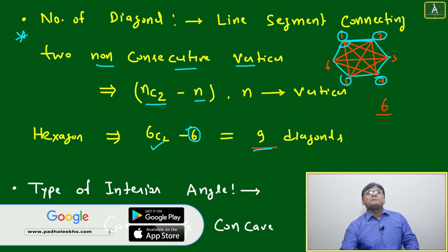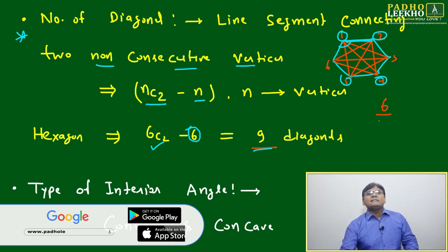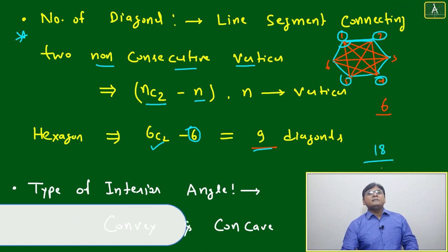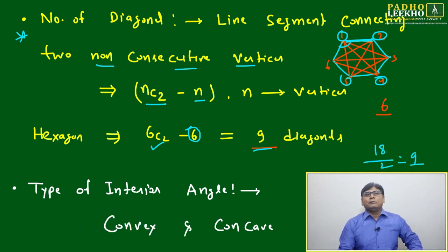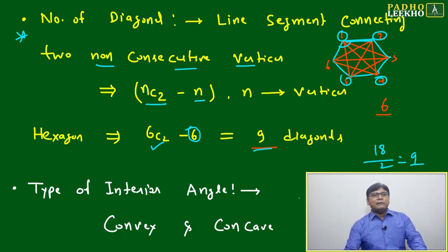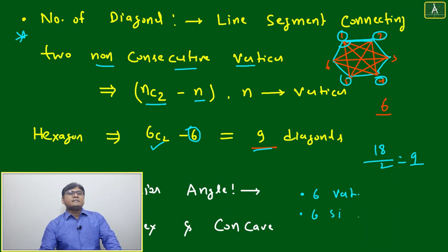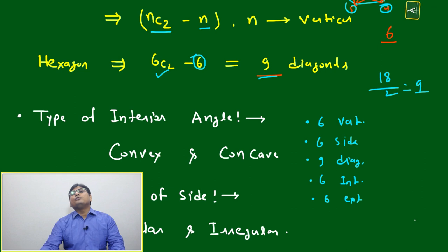Or use the influx-outflux method: from any vertex, three diagonals go out. Total becomes six into three equals eighteen; divide by two equals nine. Any method gives the same answer. So for a hexagon: six vertices, six sides, nine diagonals, six interior angles, six exterior angles — that many variables you have to deal with.